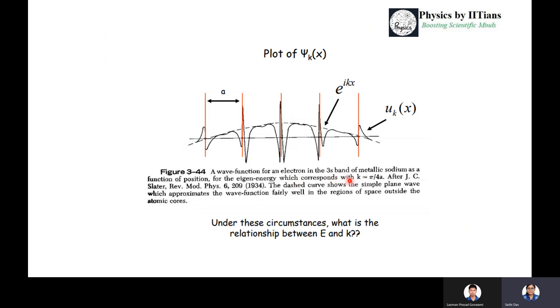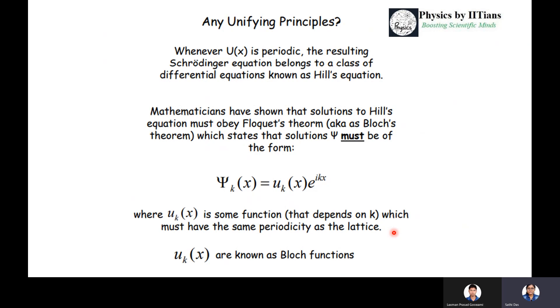Suppose we take a simple example of the 3s band of metallic sodium. We plot ψ_k(x), the wave function of the electron in the 3s band. What will be the nature of this wave function? We will find out what is the relationship between E and K - that is, what will be the dispersion relationship. The dispersion relationship will give you the matter-wave interaction. The electron as a wave will be treated inside the medium, and that interaction will be given by this EK relationship.